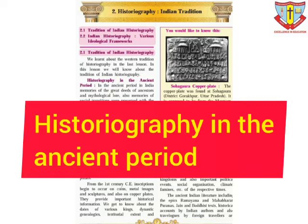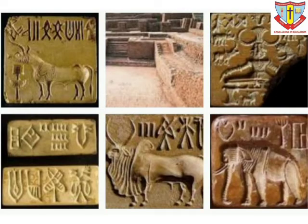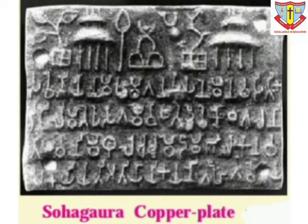Historiography in the Ancient Period. In the ancient period in India, memories of the great deeds of ancestors, mythological lore, and memories of social transitions were preserved with the help of oral recitals. The inscriptions of the Harappan seals and other artifacts confirmed that Indians had mastered the art of writing as early as the 3rd millennium BC, or perhaps before that. However, the Harappan script has not yet been successfully deciphered — that is, not transferred to a common language.